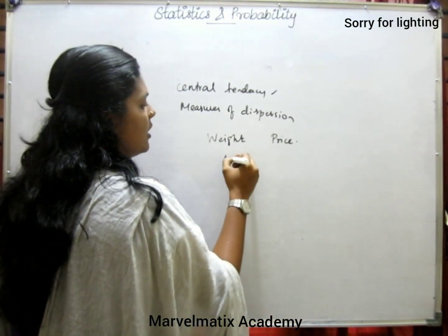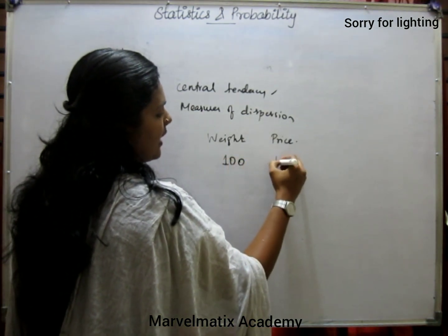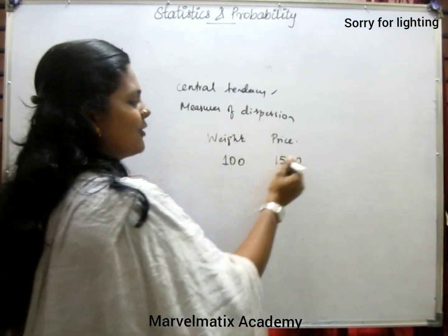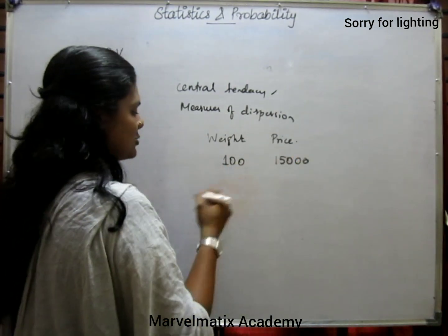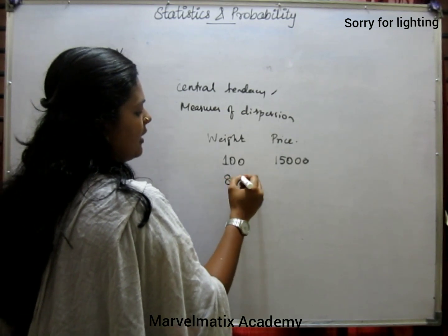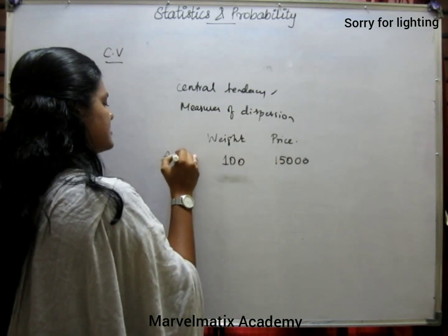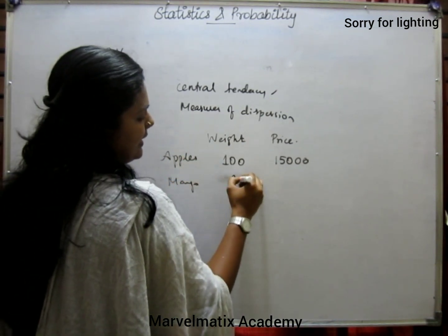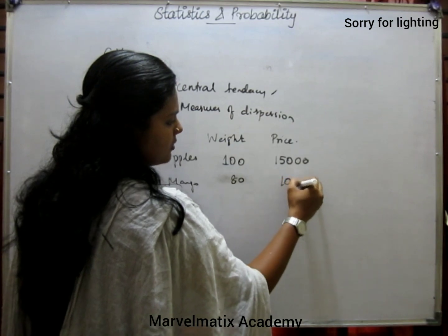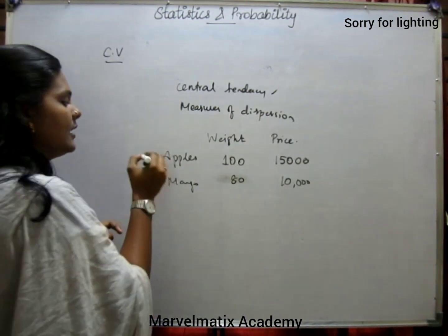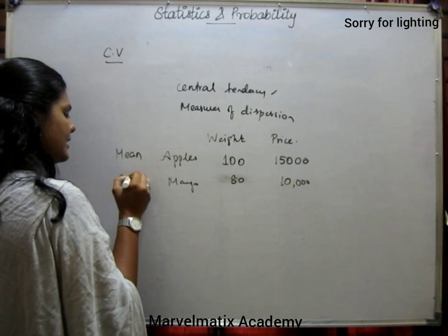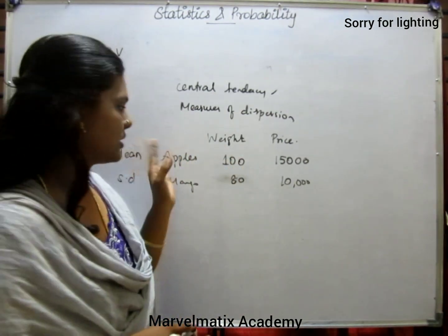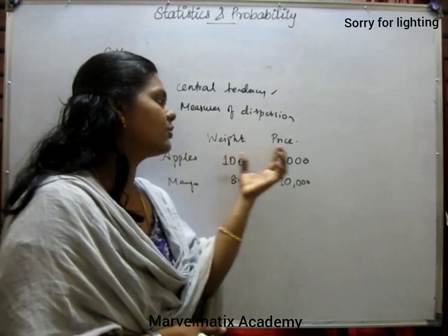If we have 100 kg of apples, we have 50. For example, we have a price. So again, we have apples here. The mango is 80 kg and we have 10,000 kg. So if we look at the mean and standard deviation — I just told you one example — the price is different.